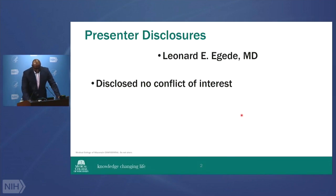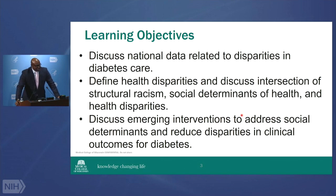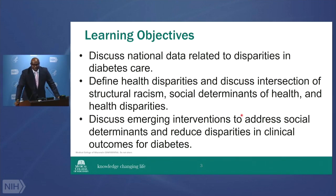I have no disclosures. The goal of this talk is to focus on national data related to disparities in diabetes care, to define health disparities and discuss the intersection of structural racism, social determinants of health, and health disparities, and then discuss some emerging interventions to address social determinants and reduce disparities in clinical outcomes for diabetes. I've studied diabetes my whole career. I find it a very good marker for a lot of the work we do because it's very prevalent, has biologic measures that are easy to track, and has social factors that drive a lot of outcomes.